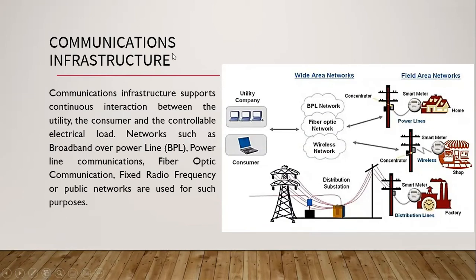The second component is communication infrastructure. In communications infrastructure, we have two types of communication. One is from the customer side to the power lines, and then through power lines we send data to cloud storage and energy management systems for further processing. This may be Wi-Fi, Bluetooth, or power line communication networks. From power lines to the utility companies, we send data through fiber optic networks, wireless networks, and broadband power line networks.